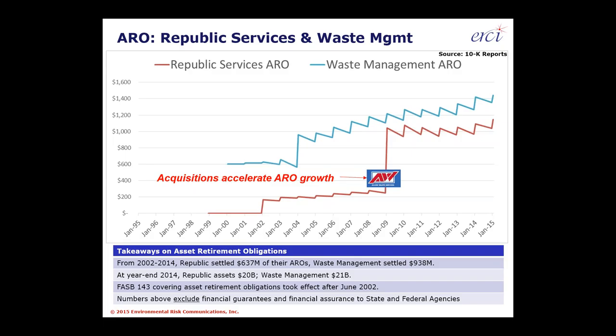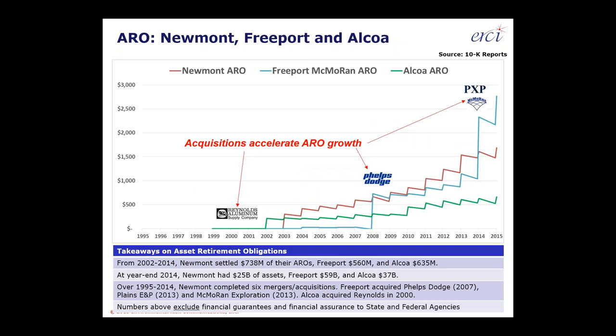Because asset retirement obligations are a present value calculation, one should expect to see a gradual unwinding of the discount rate as the present value and closure dates become closer to the present. Each company has total asset values of around $20 billion, and roughly 5% of their total assets are these asset retirement obligations. In addition, there are also financial assurance guarantees on top of those numbers, and we can expect those numbers to continue to accumulate as the asset base grows.